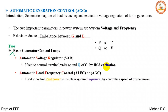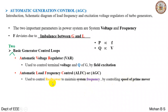The automatic voltage regulators are used to control the terminal voltage and reactive power Q of the generator by controlling the field excitation of the synchronous generator. Automatic generation control and automatic load frequency controls are used to control real power to maintain system frequency by controlling the speed of the prime mover.